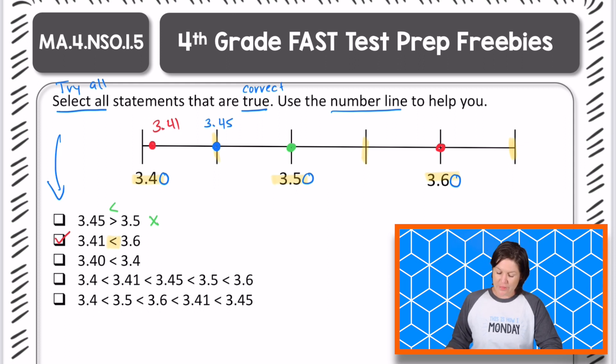Alright. The next one we've got 3.40 hundredths is less than 3.4 tenths. Well, that is not true because 3.40 hundredths is equal to 3.4 tenths. So that would make that false and we can eliminate that choice.